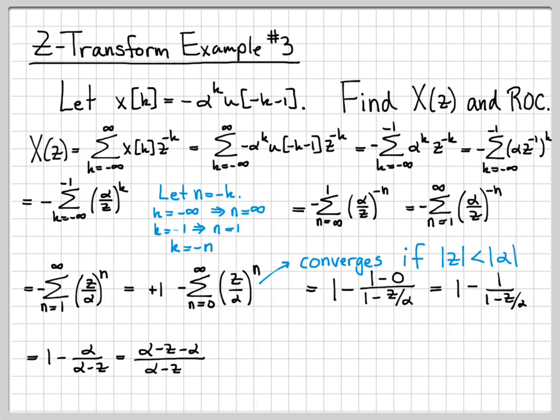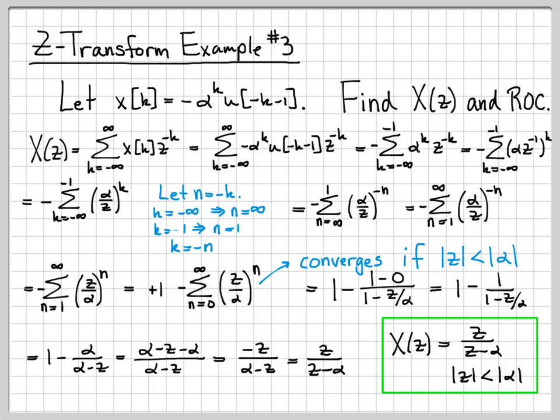Now I need to get a common denominator for this. So I multiply 1 by (α-z)/(α-z). And then I can combine like terms. The alphas cancel, and what I end up with is -z/(α-z). And then again, if I multiply top and bottom by -1, that turns into z/(z-α). So what we've just done is we have solved for X(z) and found that it's equal to z/(z-α) for all the values of z whose magnitude is less than α. So again, that's our answer.